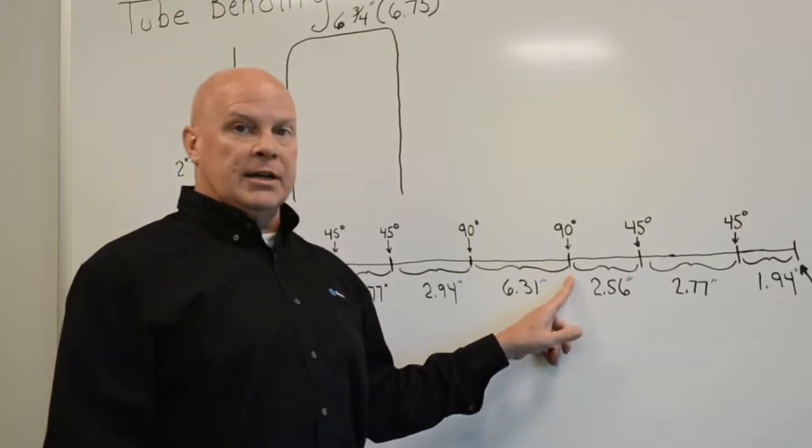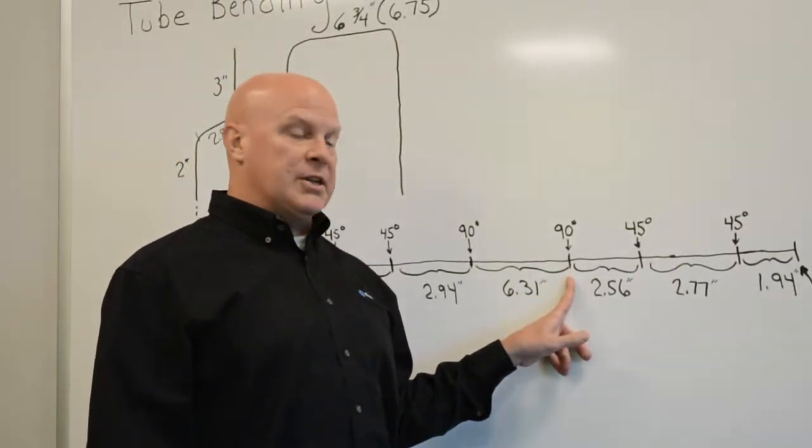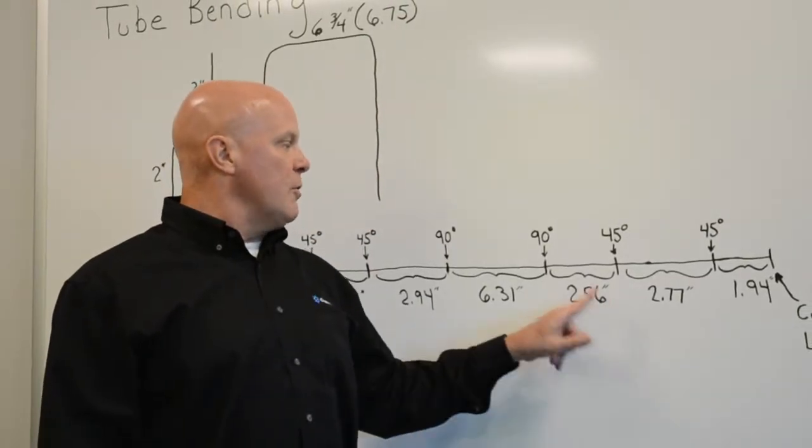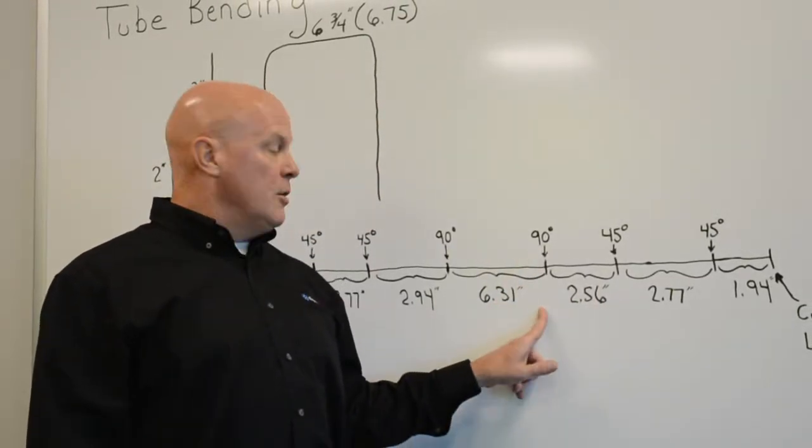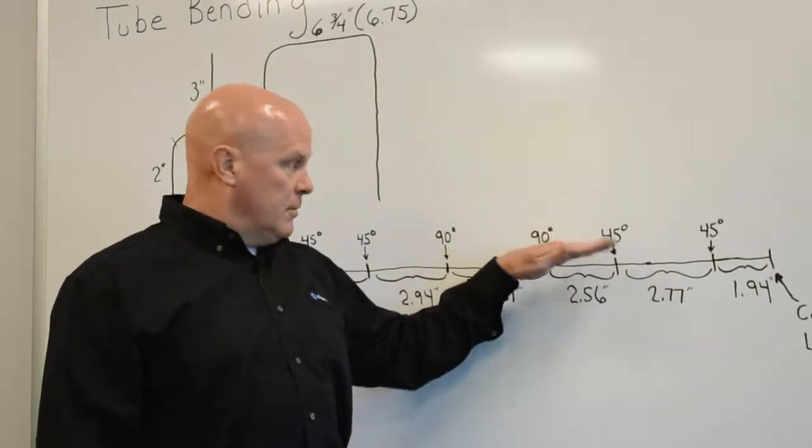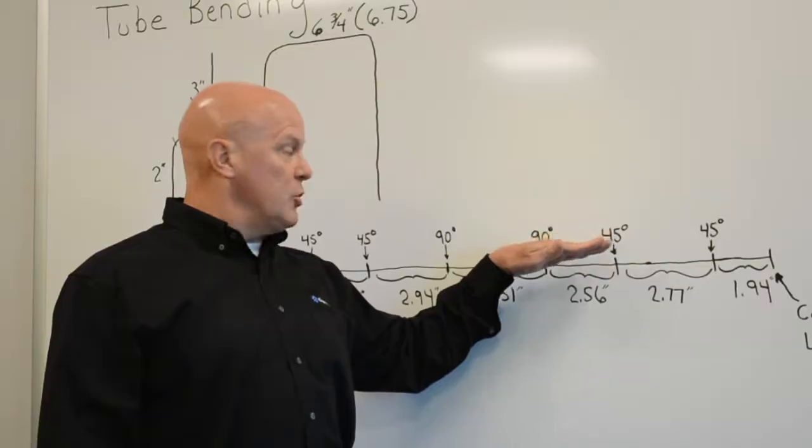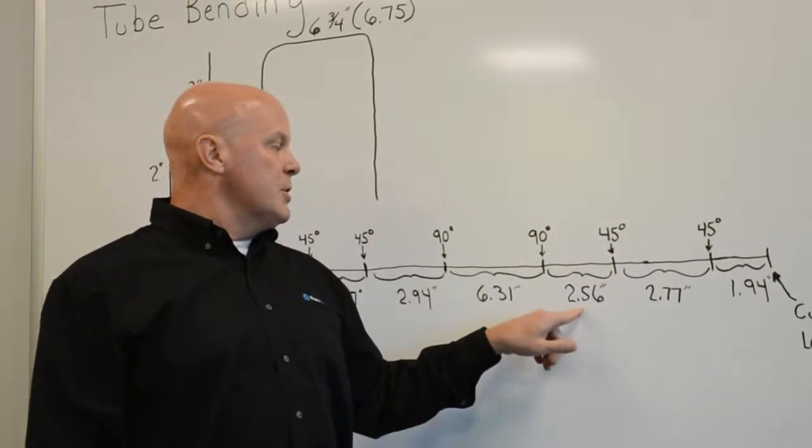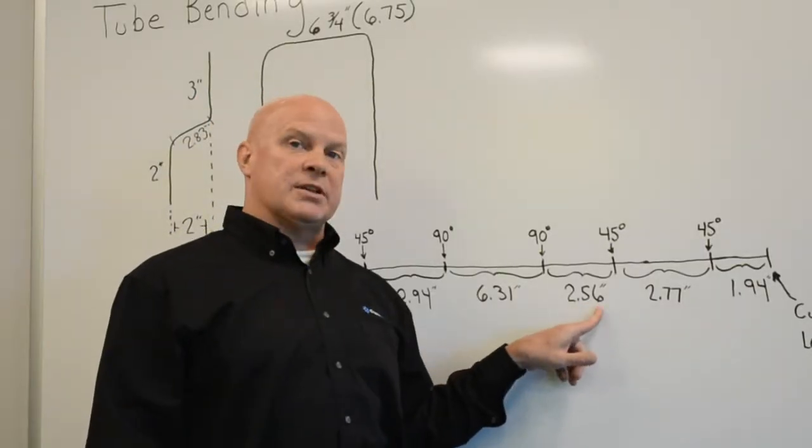I have another 90 degree bend coming down the back side of this. So I went to my 3 inch leg, I'm going to a 3 inch leg, so after a 90 degree bend, which I'm bending and I'm accounting for, because I'm adding stretch to each leg as it's happening, 7/16ths of an inch on this side. So this leg is going to be 2.56 inches.